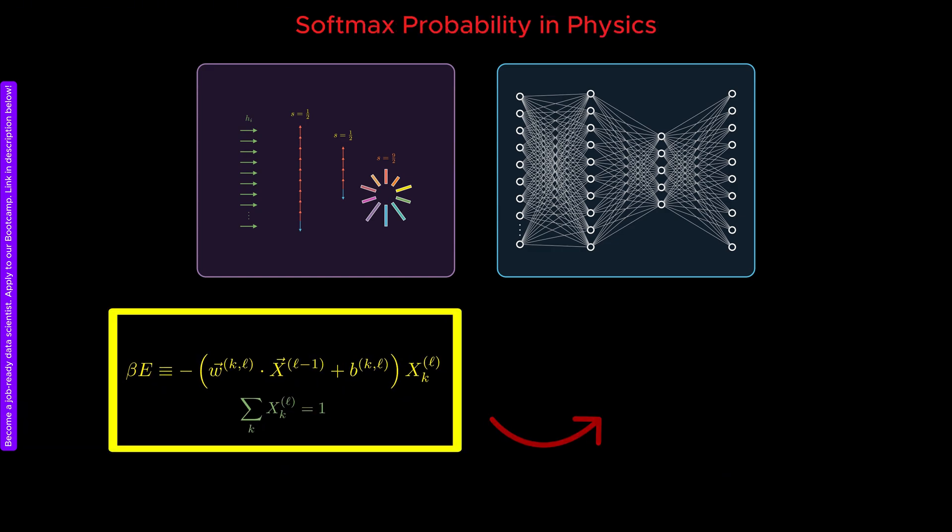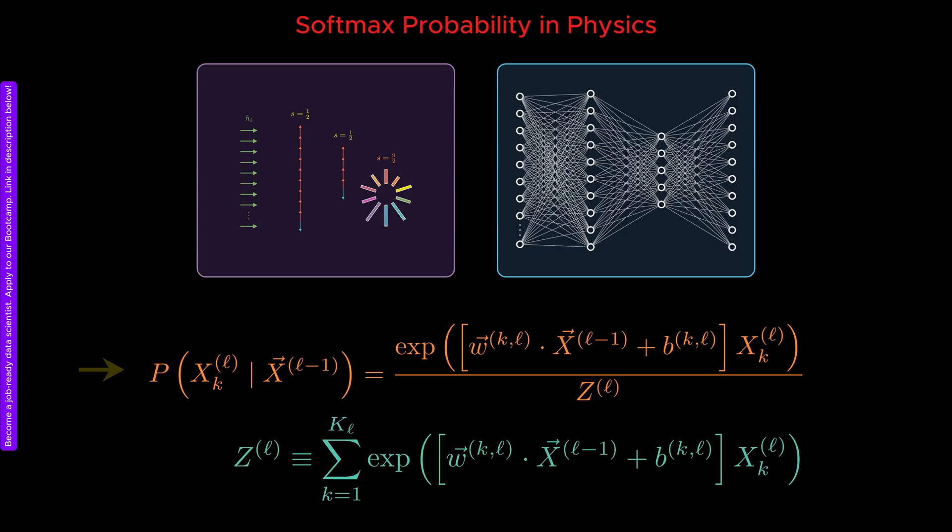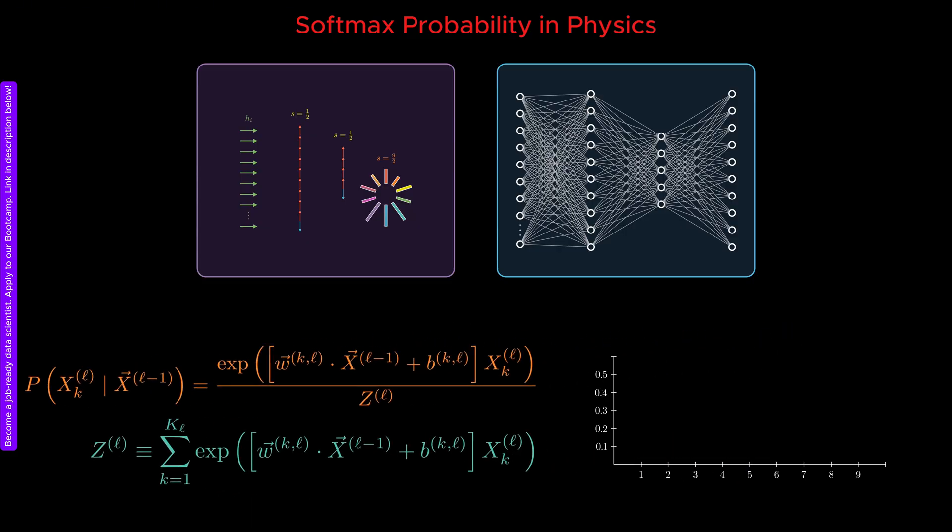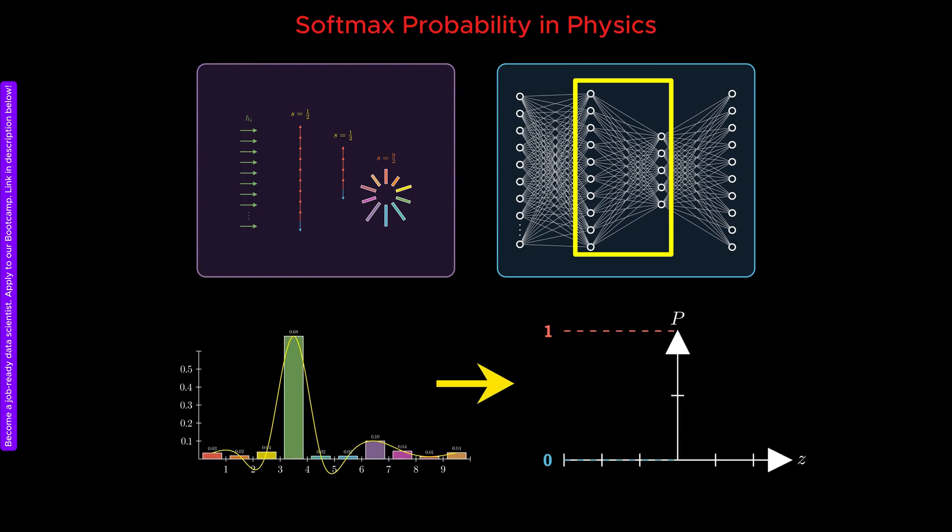Inserting these new interpretations into the statistical mechanics probability, we can write the probability of the state of a given neuron in terms of the values of the neurons in the previous layer, where the partition function, or normalization constant, is expressed as the following. This form of probability is known as the softmax function. When neurons can only take values 0 or 1, which is the case for the hidden neurons with spin 1 half, this probability reduces to what is known as the sigmoid function.